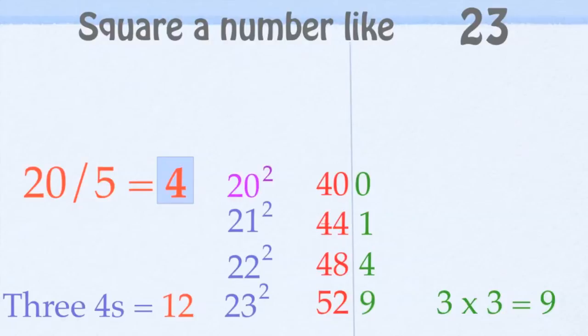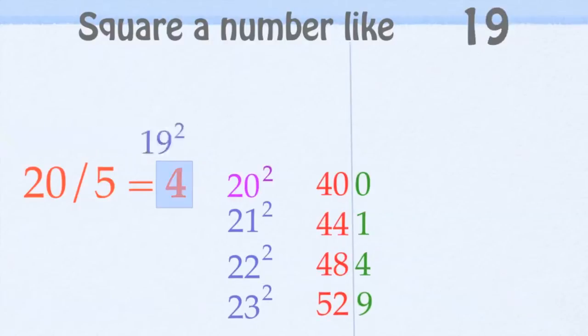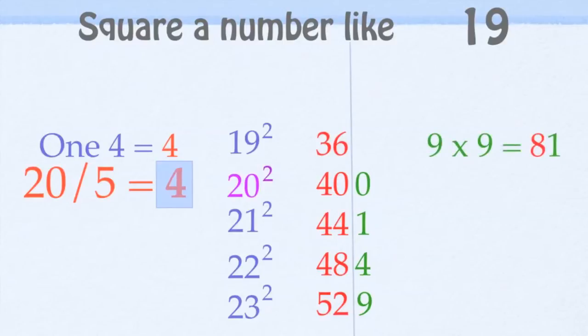Now we can go down from 20 as well as up. So if we do 19 squared, we just take away 1 4 from 40, and we're at 36. Now 9 times 9 is 81, and we just bring the 1 over. Now what's really cool is we don't even have to carry anything. It's just 361 is 19 squared, and that's the way it is.